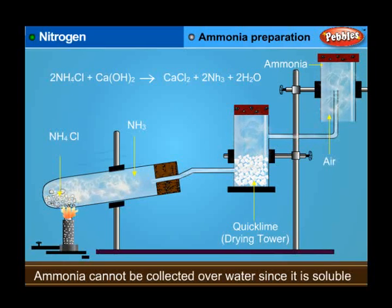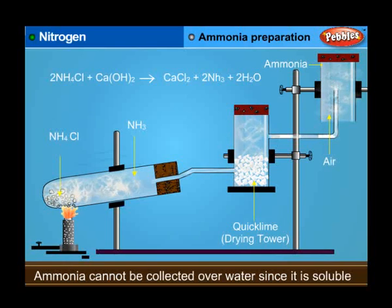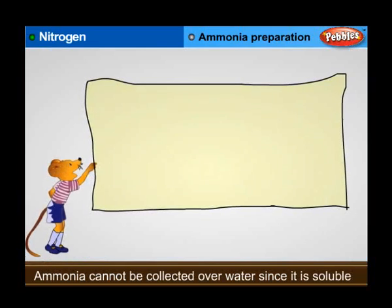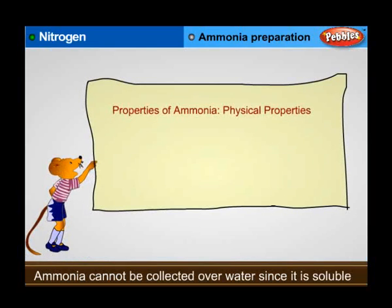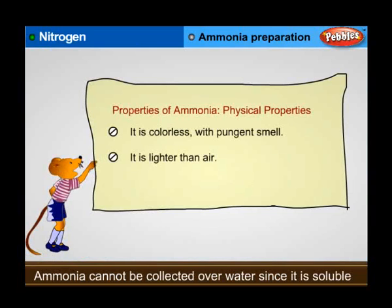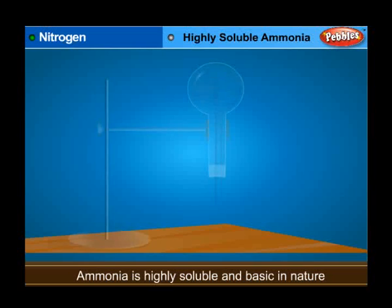NH3 cannot be collected over water since it is highly soluble in water. Physical properties of ammonia: it is colourless with a pungent smell, lighter than air, and completely soluble in water.